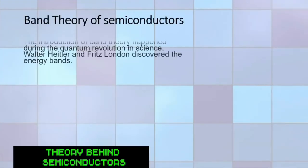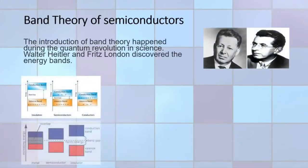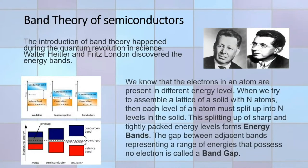Band theory of semiconductors: the introduction of band theory happened during the quantum revolution in science. Walter Heitler and Fritz London discovered the energy bands. We know that electrons in an atom are present in different energy levels. When we assemble a lattice of a solid with n atoms, each energy level must split into n levels in the solid. This splitting of sharp and tightly packed energy levels forms energy bands. The gap between adjacent bands, representing a range of energies that possess no electrons, is called a band gap.